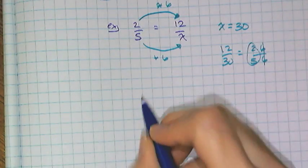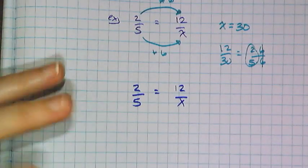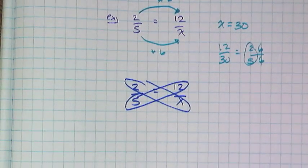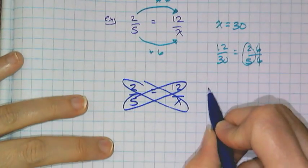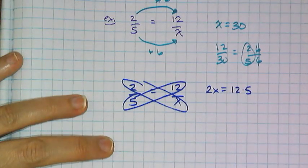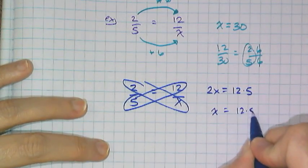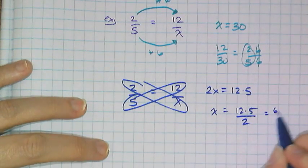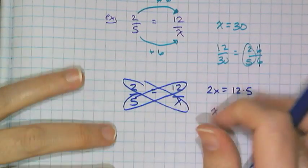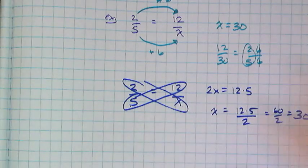Let's quickly review what cross-multiplication is before we talk about why it works. People are taught that you can make a little X diagonally, and when you multiply those things together they're going to be equal. So I know that 2 times x is equal to 12 times 5. And some people go as far as saying, I don't want 2x, I want x — so you get x equals 12 times 5 over 2, which is 60 over 2, or 30. So it is indeed true that in a proportion, the denominator of one times the numerator of the other equals denominator times numerator, making a little cross.